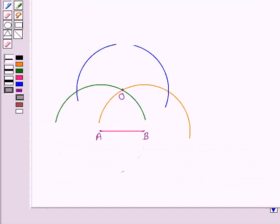So we have drawn these two arcs taking O as center such that it cuts the previous arcs at the points C and F.